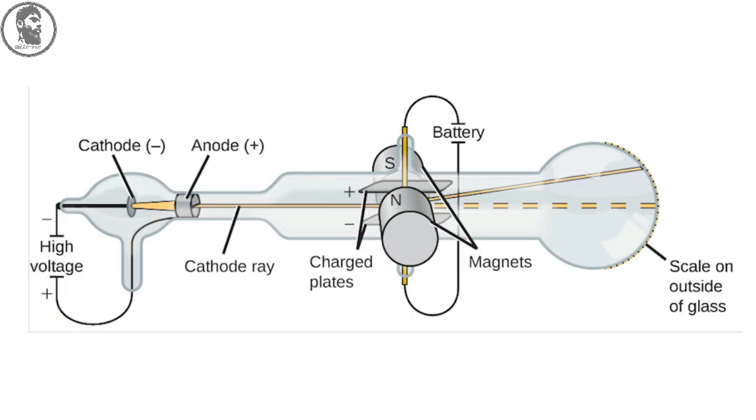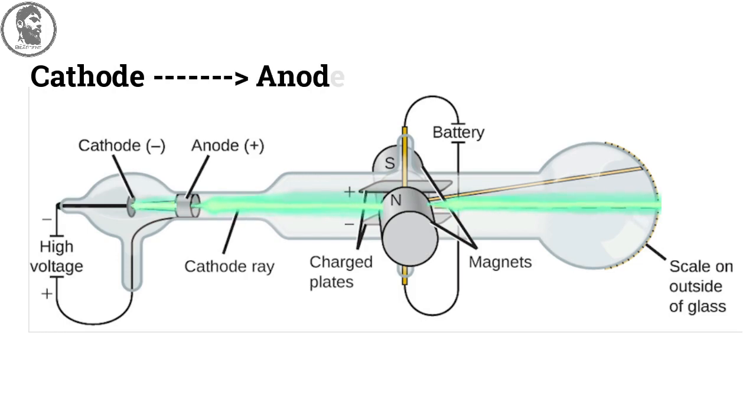Then a high voltage is applied across the two electrodes at one end of the glass tube. When high voltage is applied, then J.J. Thomson and his team observed a beam of particles to flow from cathode which is a negatively charged electrode towards anode which is a positively charged electrode.